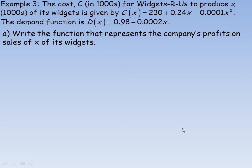In example three, the cost function gives the cost in thousands to produce x thousand widgets, and there is a demand function — sometimes called the price function — which tells us the price consumers will pay for a given production level x.